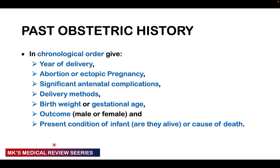Next, ask about the past obstetric history for any prior pregnancies — assuming this is not the first. List these in chronological order, giving: year of delivery, whether it was an abortion or ectopic, any significant antenatal complications, mode of delivery, birth weight, gestational age at birth, outcome (male or female), and the present condition of the infant. If the infant died, ask for the cause of death.